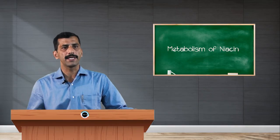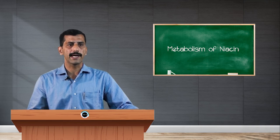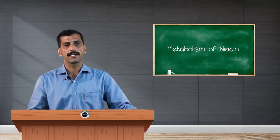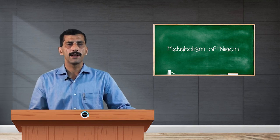The major deficiency manifestation of niacin is a disease called pellagra. Pellagra is also called a 3D disorder, characterized by dermatitis, diarrhea, and dementia. Dermatitis is an inflammation of the skin, with the major areas affected being the neck, ankle, and foot. The second major symptom, diarrhea, involves excretion of loose, mucus-containing and bloody stool, which leads to loss of body weight.